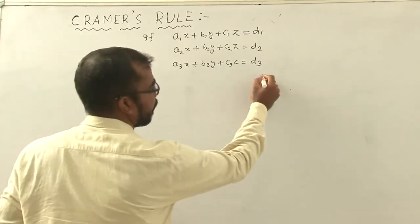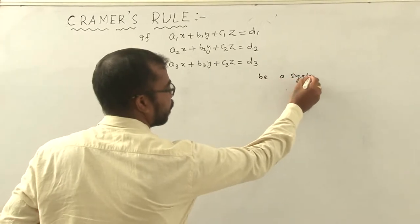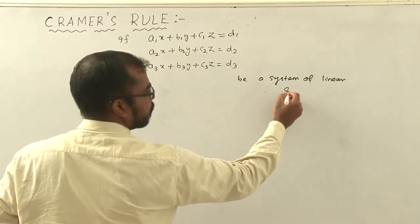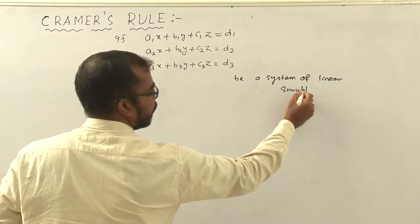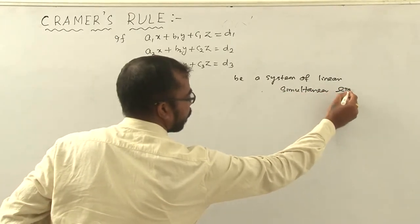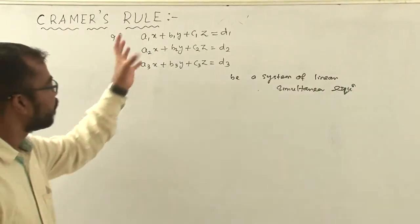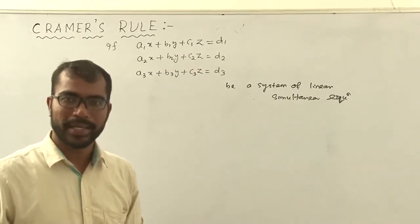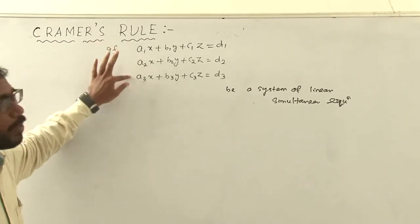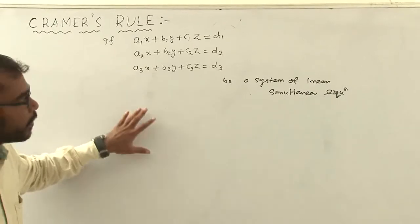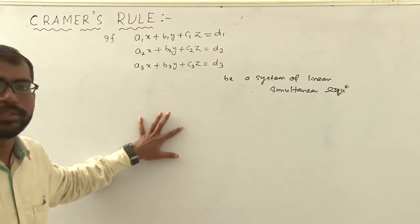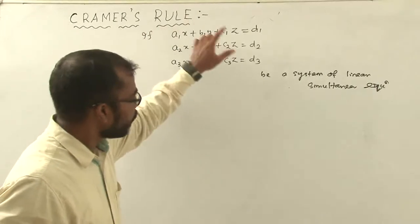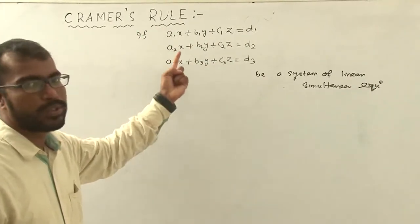If three equations form a system of linear equations — system means it contains three number of variables, so it has three number of equations, so it is called a system. If it contains two number of variables then we have to write two number of equations, so it is a system also. Here you can see in this system there are three variables and three equations.